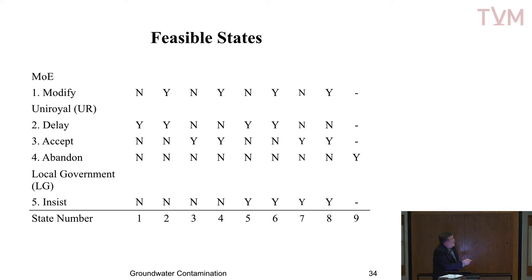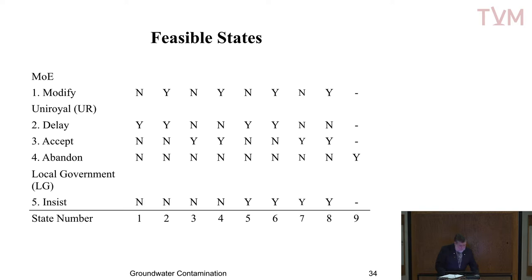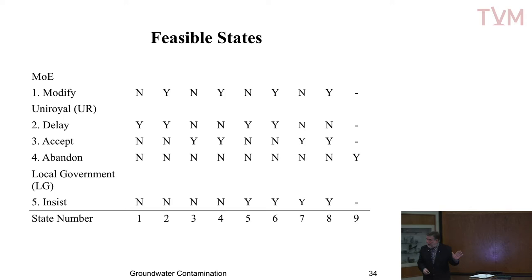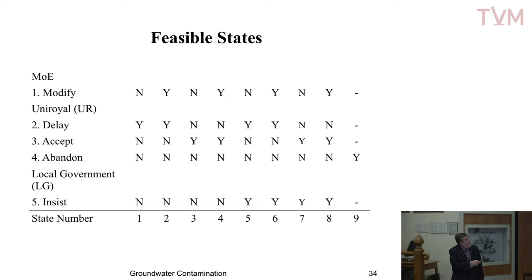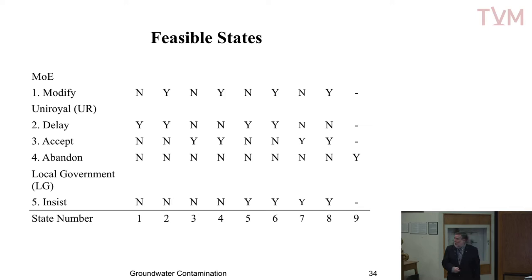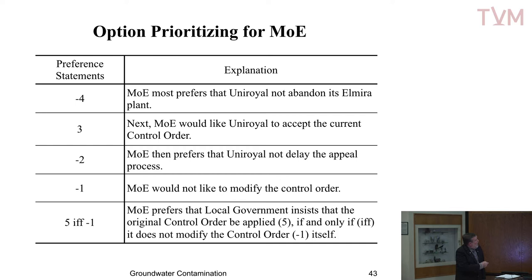We can even have if-and-only-if statements — typed into the computer like: 'The Ministry of the Environment prefers that local government insist the original control order be applied (option 5), if and only if the Ministry does not modify the control order (don't take option 1).' We think this is pretty close to the way people think in practice. So we ask: how do people express their preferences? They express them in statements like these.